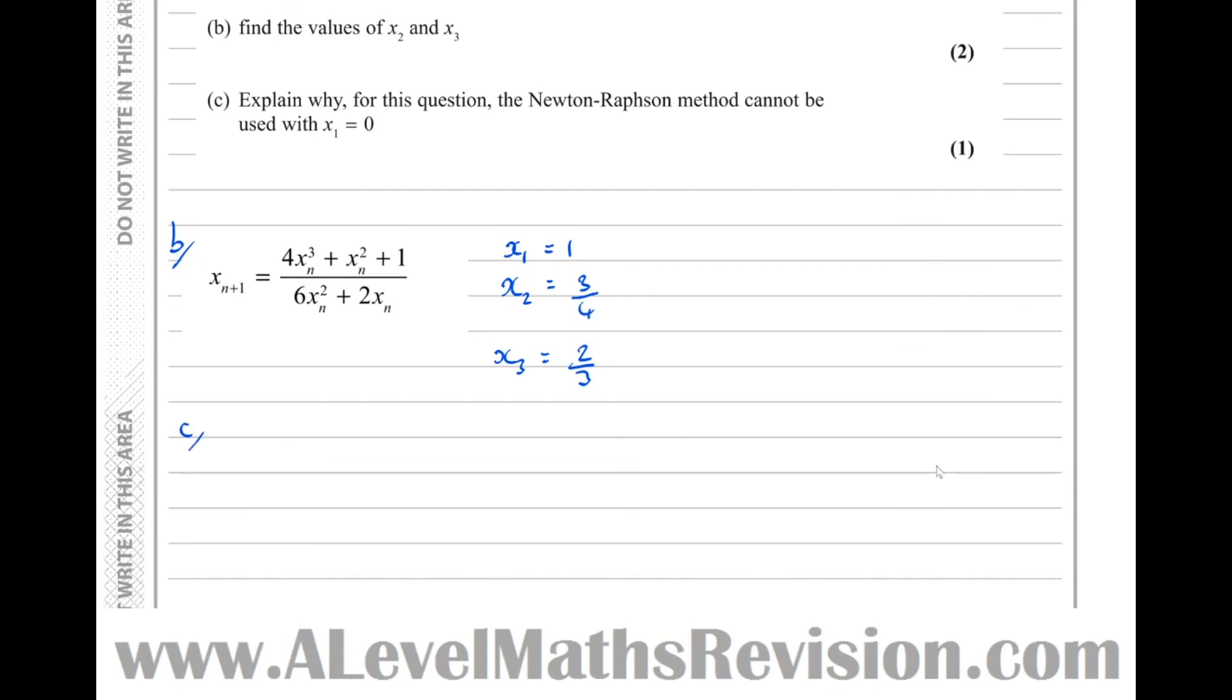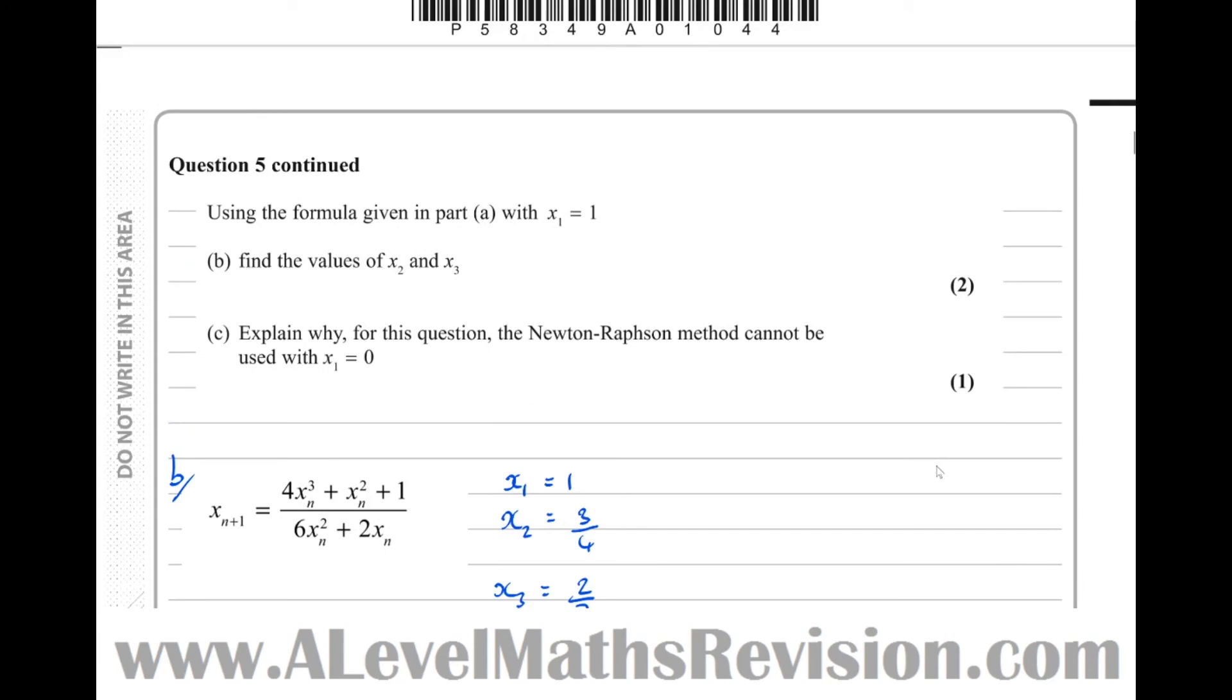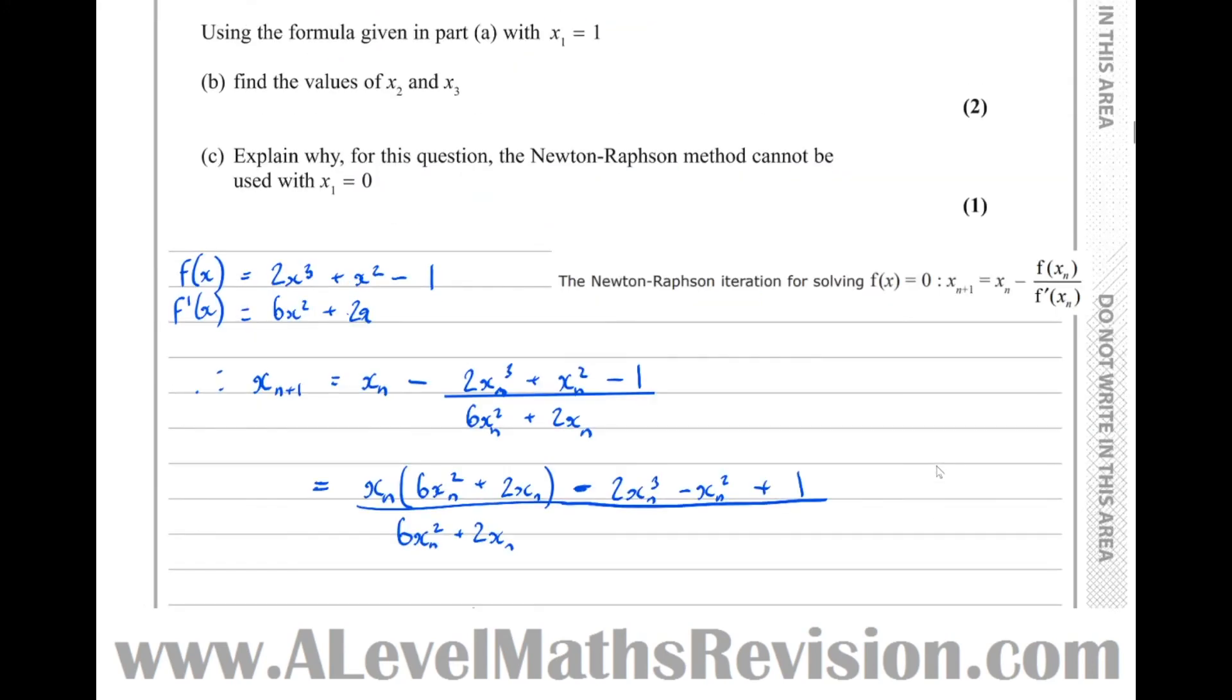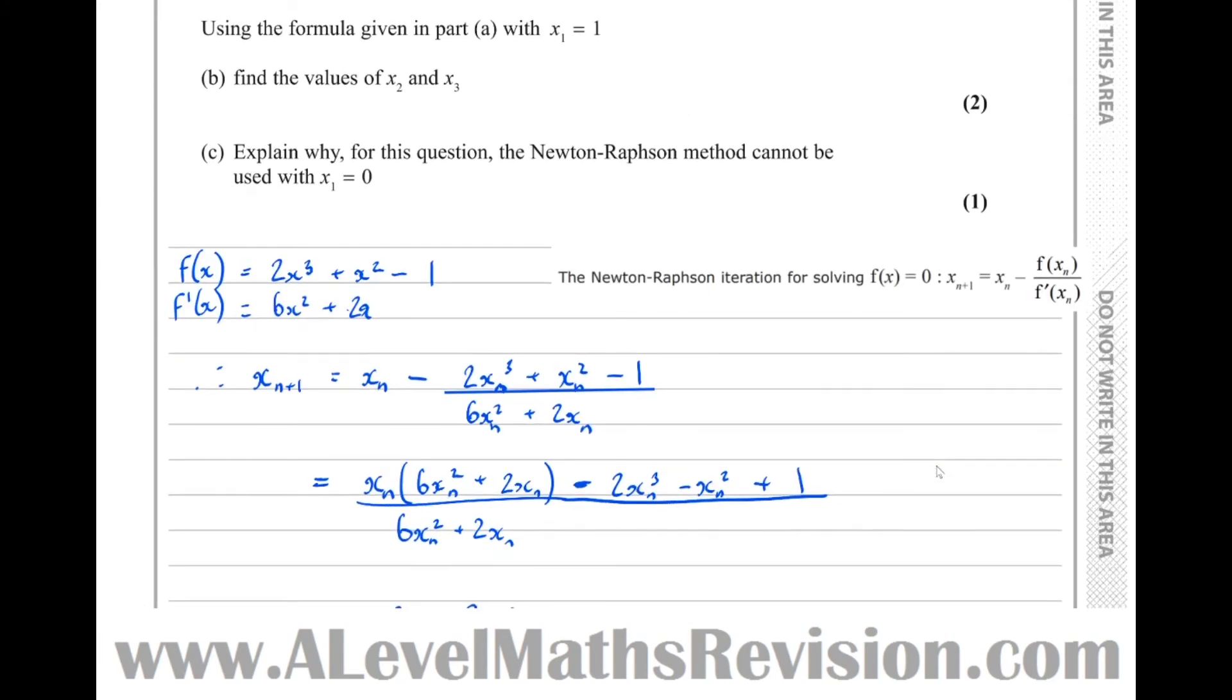Then c. Explain why for this question, the Newton-Raphson method cannot be used with x1 equals 0. To do that, we've got to go right back up to here, where we worked out the differential. If we sub 0 into the differential, we get 0.